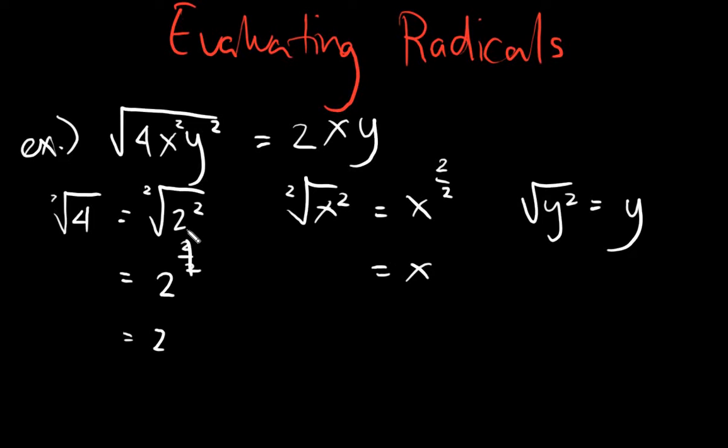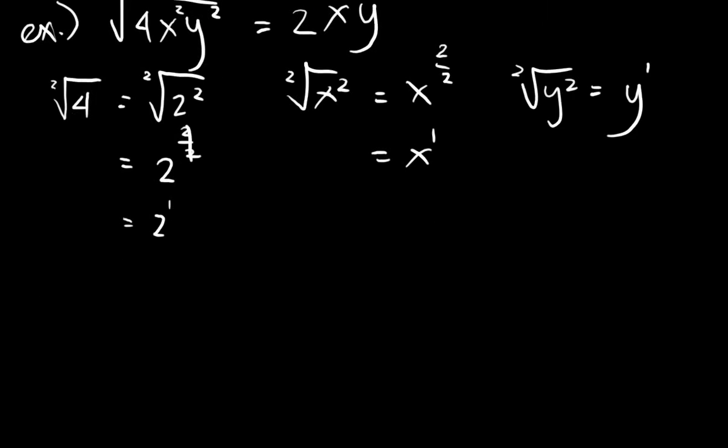So what happens here? You will take the index and you will divide it by the exponent. Take the exponent and divide it by the index. 2 divided by 2 is 1, 2 divided by 2 is 1 also. So to simplify this, you will just take the exponent and divide it by the index.